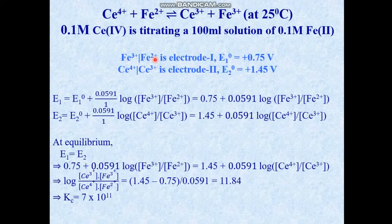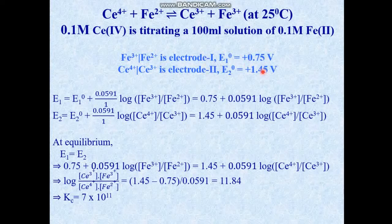Which reaction takes place more readily? The reaction with the greater negative ΔG° value — that is the cerium system, because it has the higher positive E° value. From this we conclude that iron is placed above cerium in the electrochemical series, since iron is less positive, i.e., more negative, than cerium.